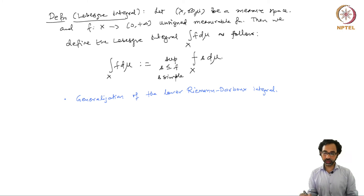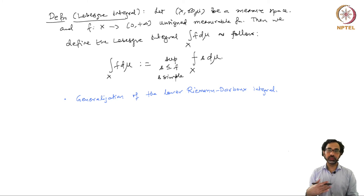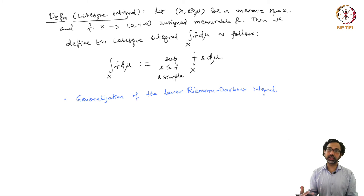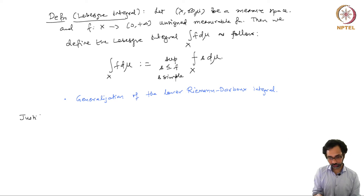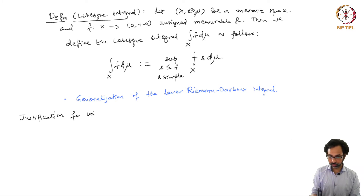The question arises: why do we take the lower one and not define both a lower and upper integral, saying the Lebesgue integral exists when those two agree, as we did for Riemann integration? We have to say some words about the justification for using the lower integral as our definition for the Lebesgue integral.